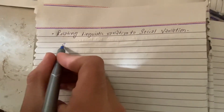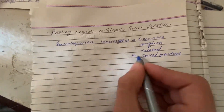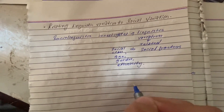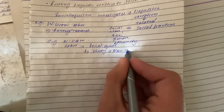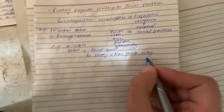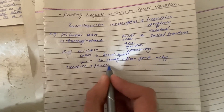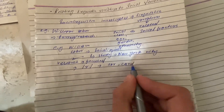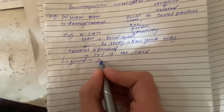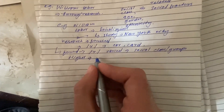Sociolinguistics also investigates how linguistic variation is related to social factors such as social class, age, ethnicity, and gender. For example, William Labov, a prominent sociolinguist, conducted a study in New York City in the 1960s examining the relationship between linguistic variation and social factors. His research focused on the production of post-vocalic 'r' — the r-sound — specifically in words like 'car' and 'card.' Labov found that the production of 'r' varied across different social groups, with higher-class individuals being more likely to pronounce the r-sound than working-class individuals.